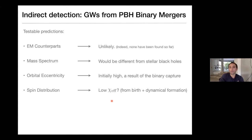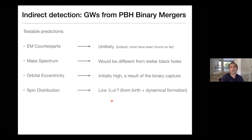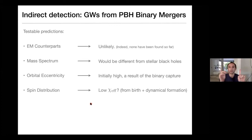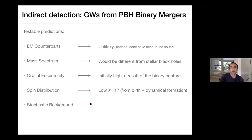Then there's the spin distribution. We expect basically no spin or very small spin for primordial black holes as they are produced, because there's not much angular momentum — unlike stars, which spin quickly as a result of the formation process. We don't expect the initial spins to be very large. Also, since the binaries are formed through dynamical formation, there is no reason to expect the spin orientation to be aligned. If we consider the orientation of the spin that we can measure with LIGO, we can distinguish between PBHs and binary stars, which usually have spins aligned perpendicular to the orbital plane.